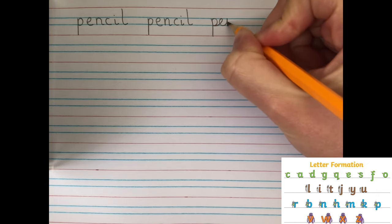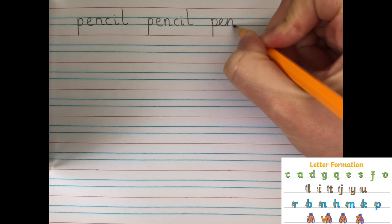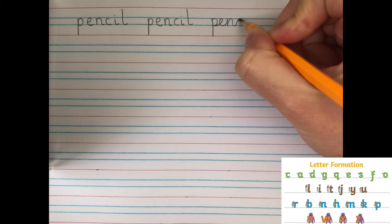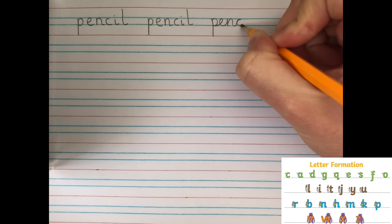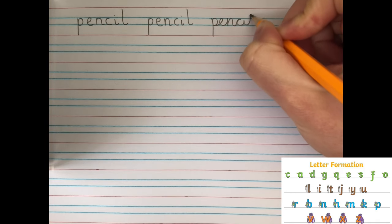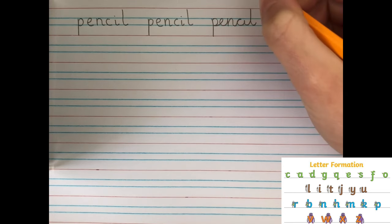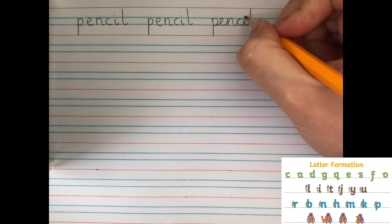And again, with my N. So, my pencil hasn't left the paper yet. Carry on for C. Then my I. I'm not going to dot my I yet, because I'll do that at the end. Keep your pencil on the paper. Then up for that ladder letter. Pencil. And the last thing I need to do is dot my I.